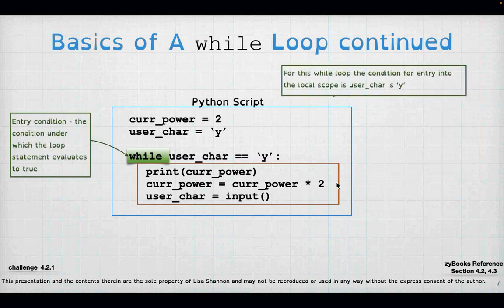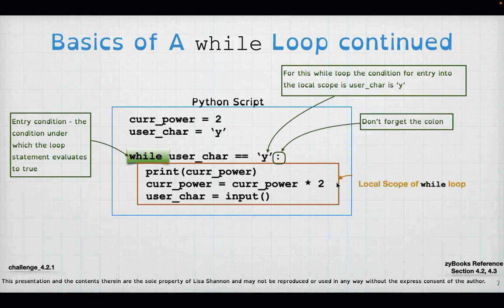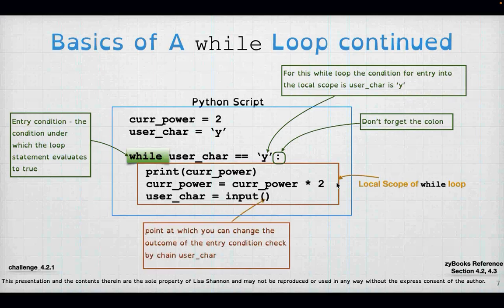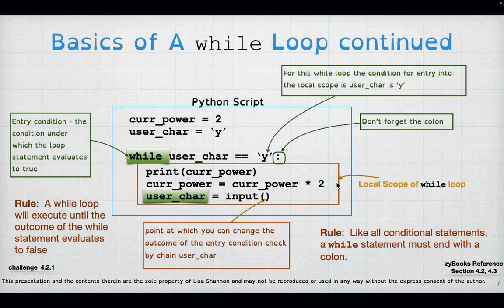The entry condition for a loop: to enter a while loop, you define the test variable so that the condition evaluates to true the first time — that's why 'user_care' is set to lowercase y right before the while statement, so you go through the loop at least once. Don't forget the colon at the end of the while statement — just like branches, you must end with a colon or you'll get a syntax error.